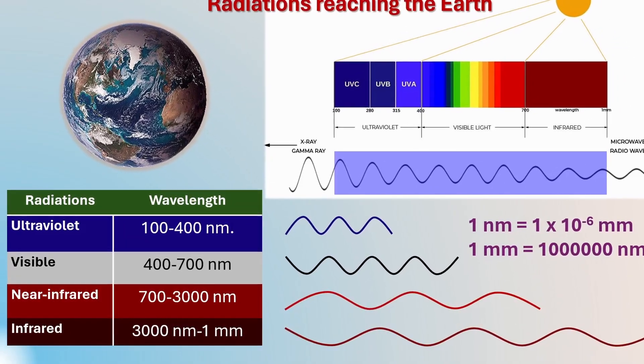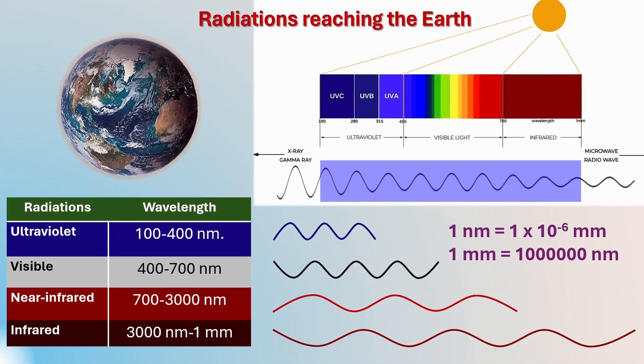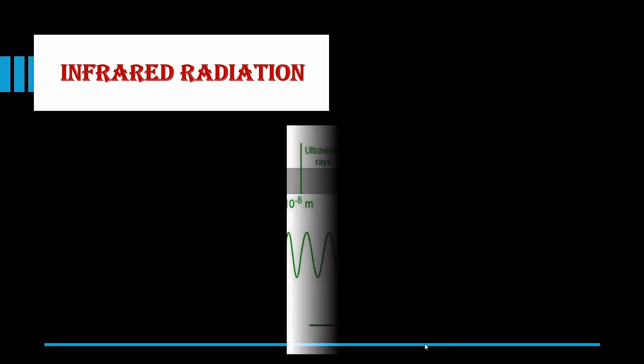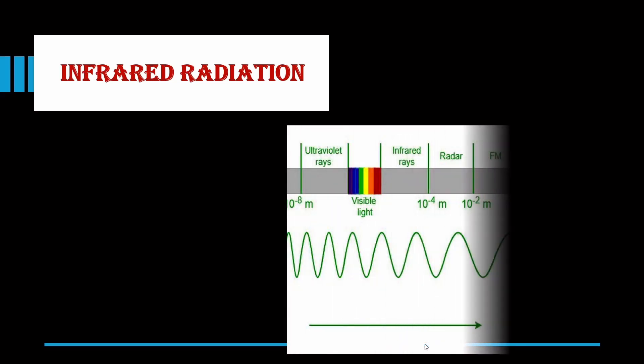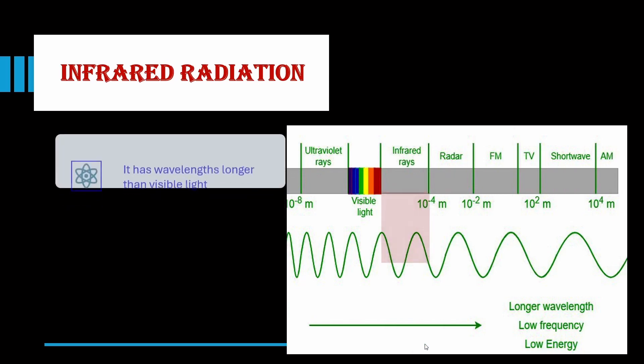So, what makes the infrared radiations so unique in its characteristics? Infrared radiation has three main features. First, it is a type of electromagnetic radiation that has wavelengths longer than those of visible light, so it is invisible to the human eye.